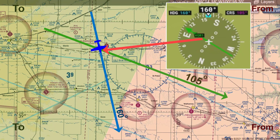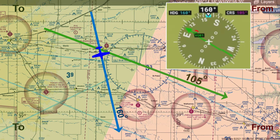The D-bar has now centered with the rest of the CDI needle, indicating that we are now over the 105 degree radial course. Notice also that we are still on the to side of the radial.